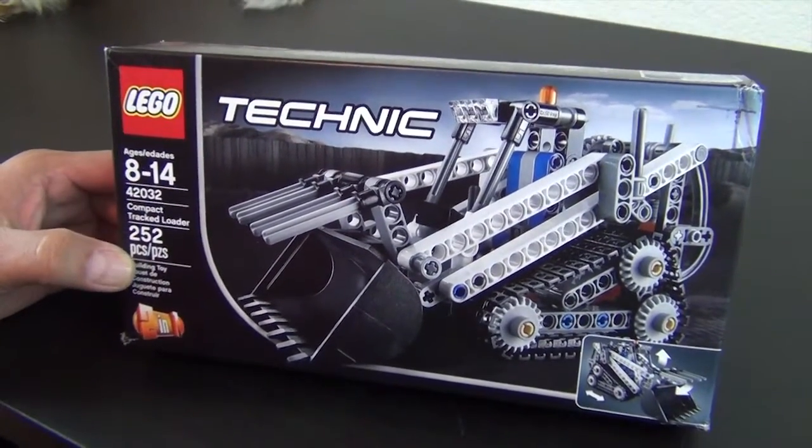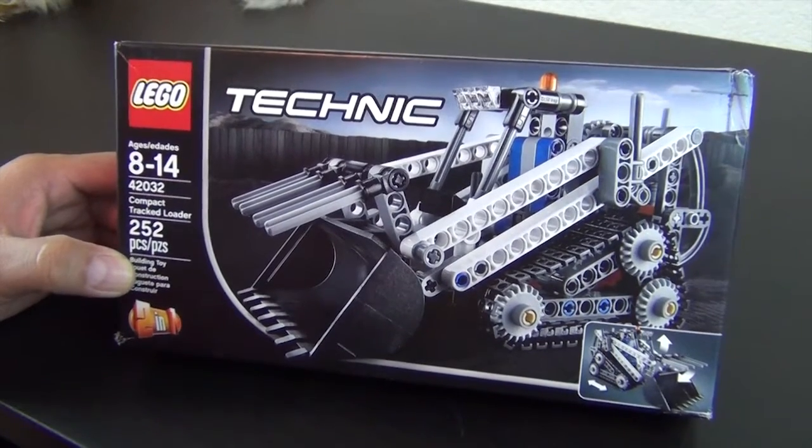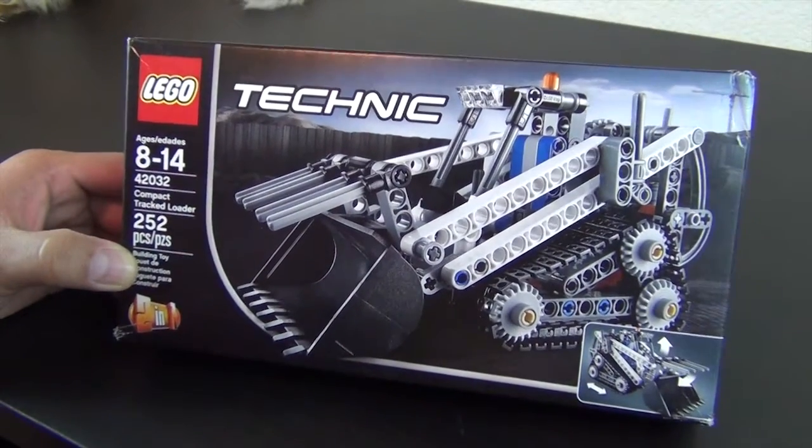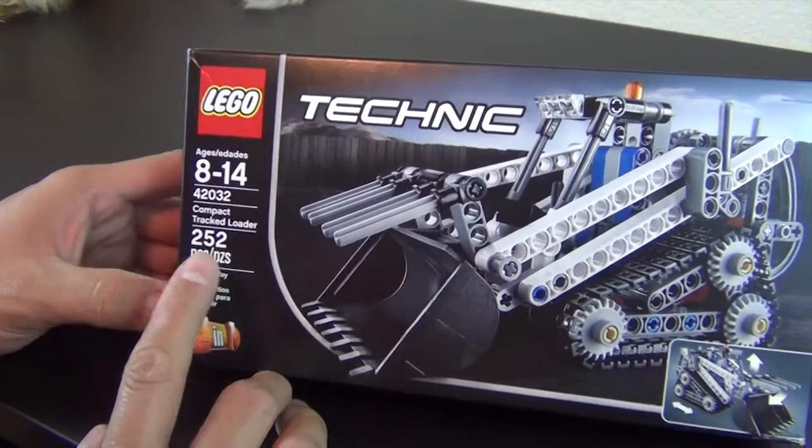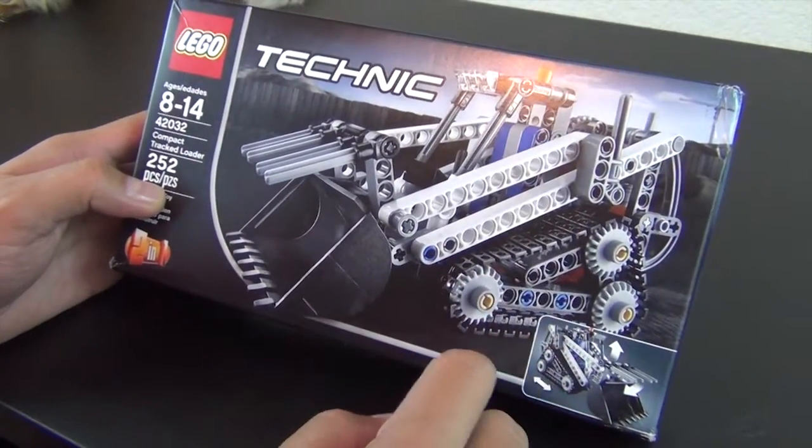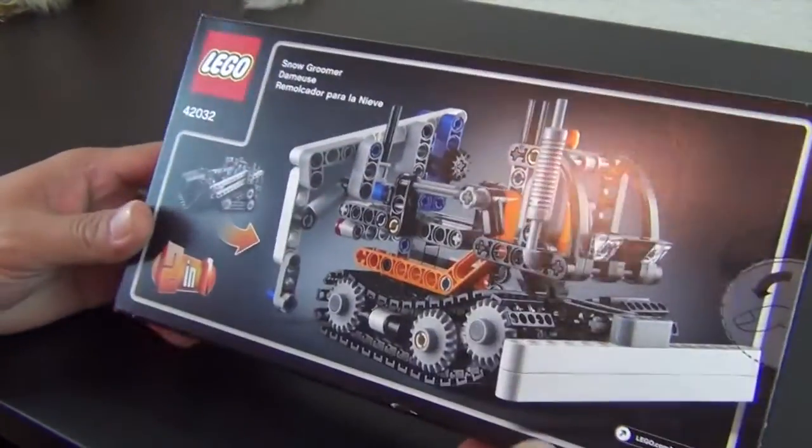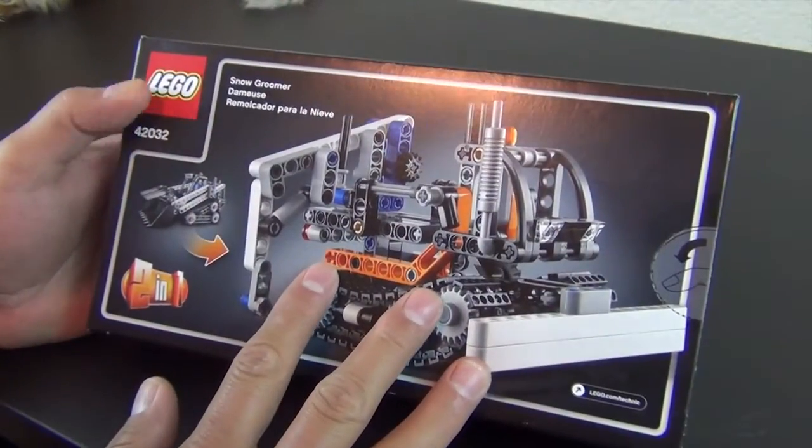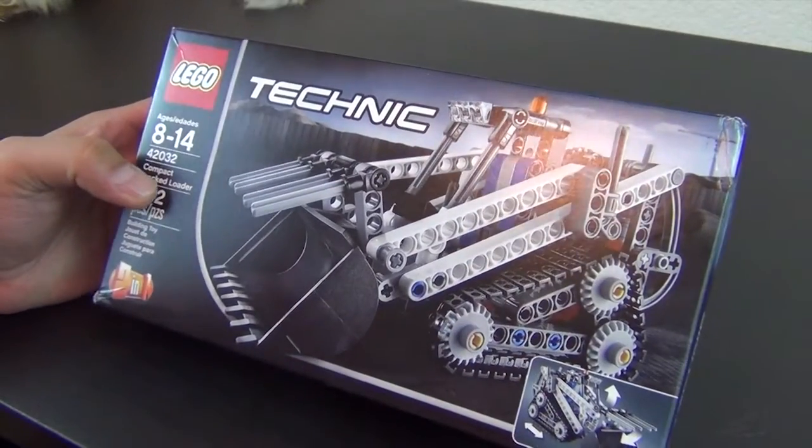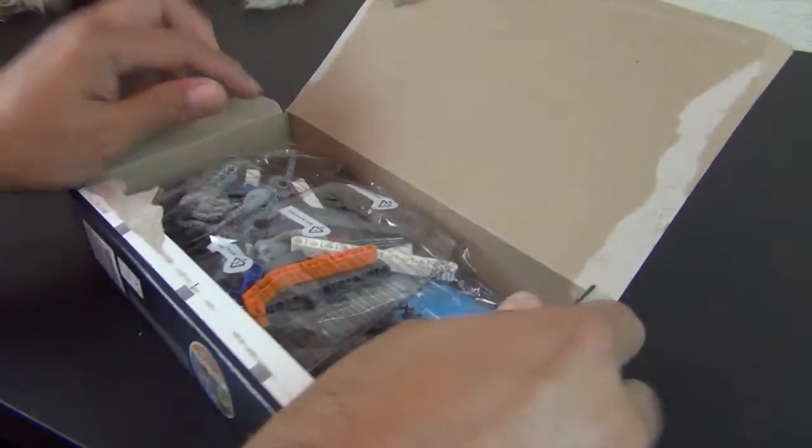Hey everyone, welcome back to the Hidden Brick where today we are going to build this Lego Technic set. It's been a while since I've built a Technic set, and funny thing is Technic is what brought me out of my dark ages. It's kind of like coming home to me because I love Technic sets - it's my favorite theme of all the Lego themes. This is the compact tracked loader, a relatively small set, only 252 pieces, and probably at least 70 or 80 of them are those little tank treads.